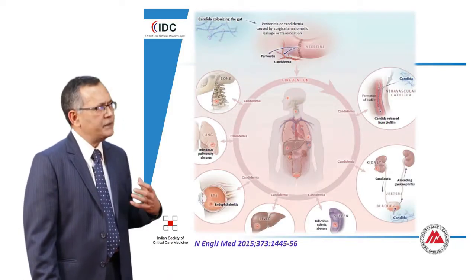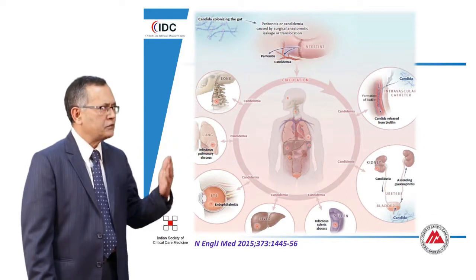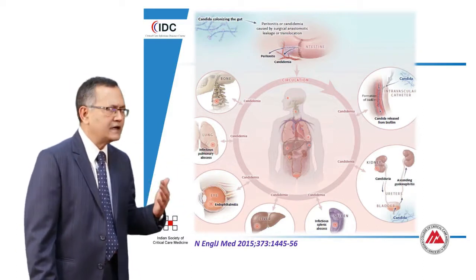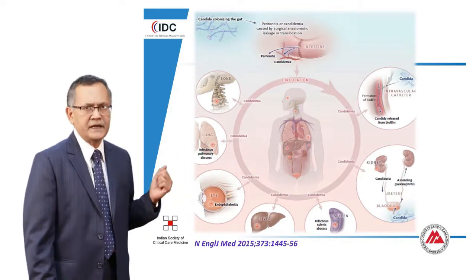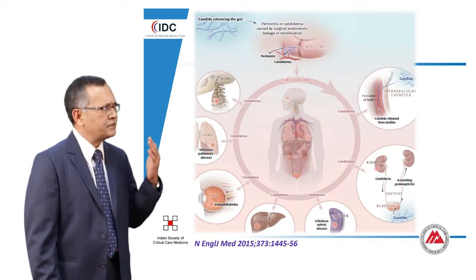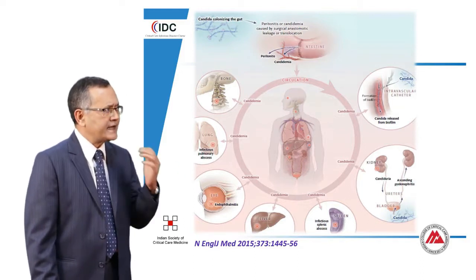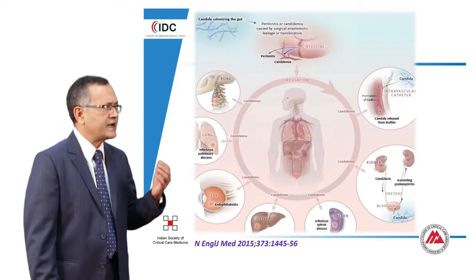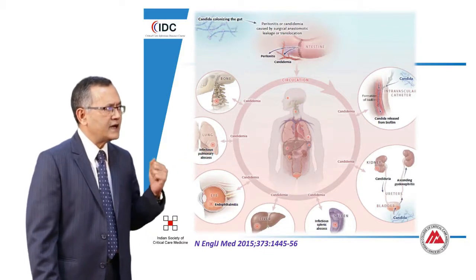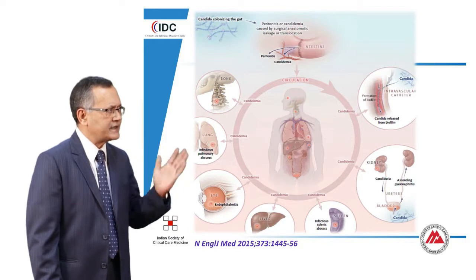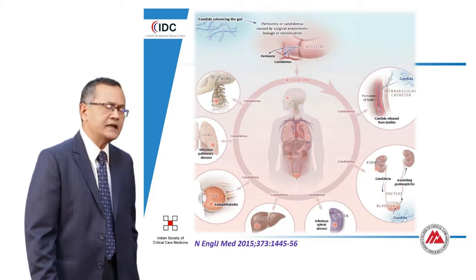Where can candidemia originate from? It can come from the gut when there is cytotoxic chemotherapy — the fungus colonizing in the gut gets a chance to enter the peritoneum and affect deep tissue, which occurs mainly in immunosuppressed hosts or cancer patients on cytotoxic chemotherapy. A second source is vascular lines — whether peripheral or central. If good clinical practice is not followed, candida can migrate and enter the intravascular catheter.